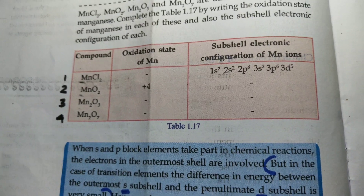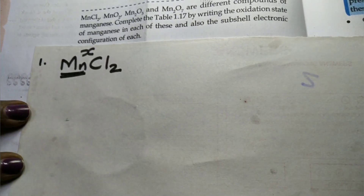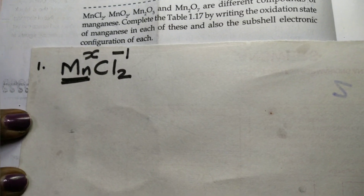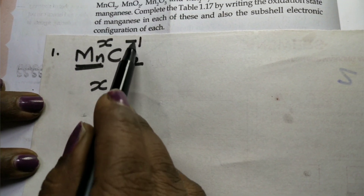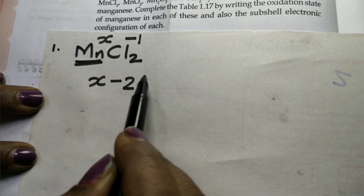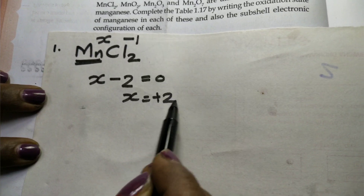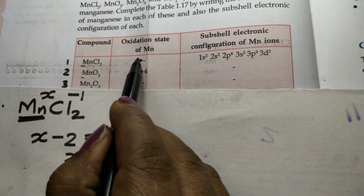Now let's find the oxidation state of Mn in MnCl₂. The sum of oxidation states equals zero. So x plus 2 times minus 1 equals zero, giving minus 2. Therefore x equals plus 2. The oxidation state of Mn in MnCl₂ is plus 2.